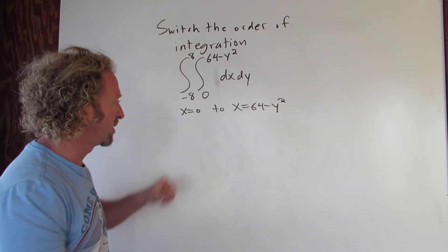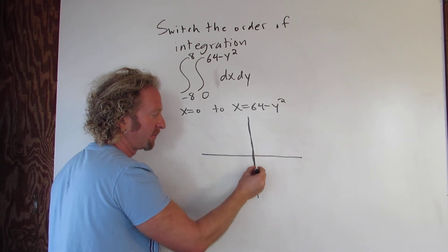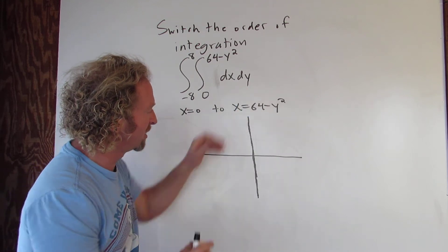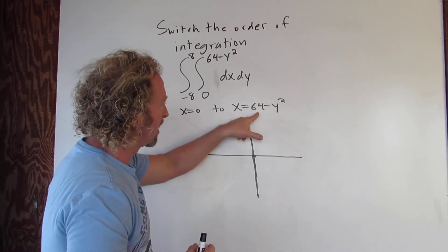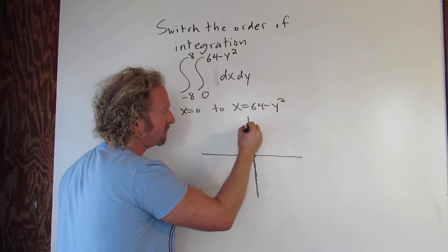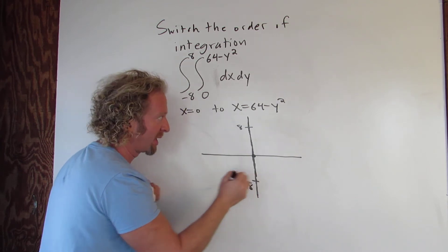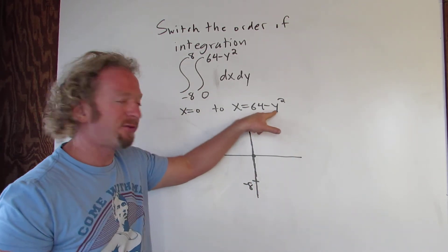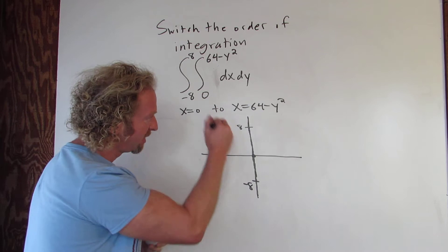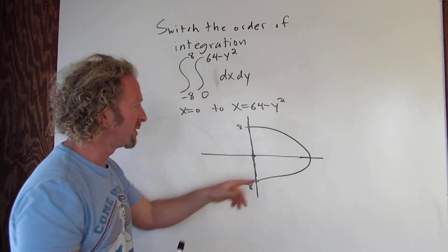Now we're going to sketch this region. x equals 0 is a vertical line. For the curve x equals 64 minus y squared: when y is 8, x equals 64 minus 64, so x is 0. Likewise when y is negative 8, x is also 0. So the curve passes through (0, 8) and (0, -8).